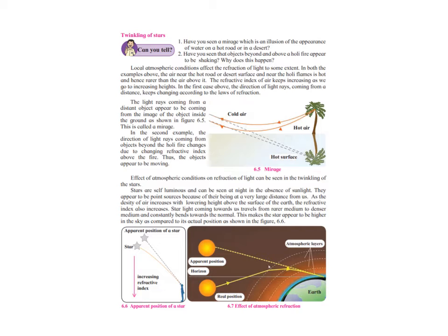Similarly, if you observe the flame when you burn the holy fire and see the air above the fire directly, it appears as if there is an image or something moving over there. Why does that happen? In both examples, the air near the hot road or the desert surface and near the holy flame is hot, and hence the air is rarer as compared to the air above it. The refractive index of air keeps increasing as we go on increasing height.